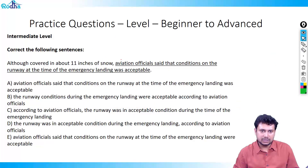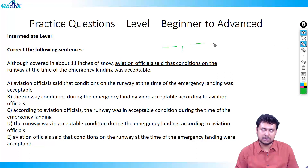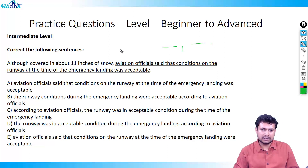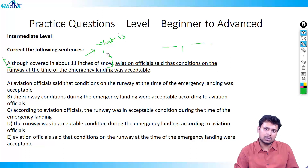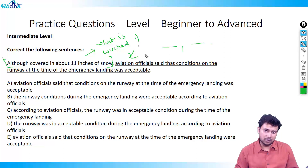Next question: 'Although covered in 11 inches of snow...' Again this is a dangling modifier — what is covered in 11 inches of snow? From the question it appears aviation officials are covered, which is obviously wrong. What is covered is the runway. So all options that place aviation officials first are eliminated, leaving options B and D.